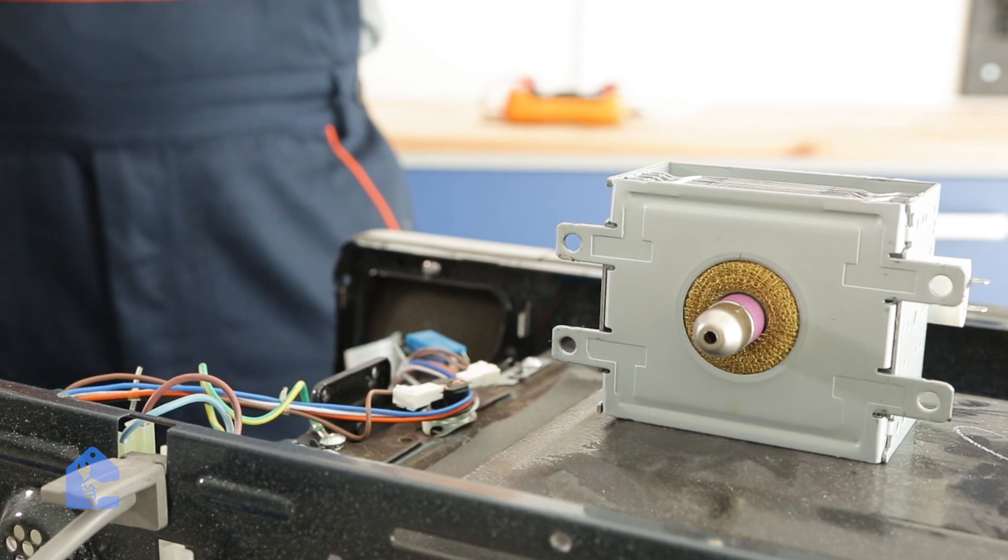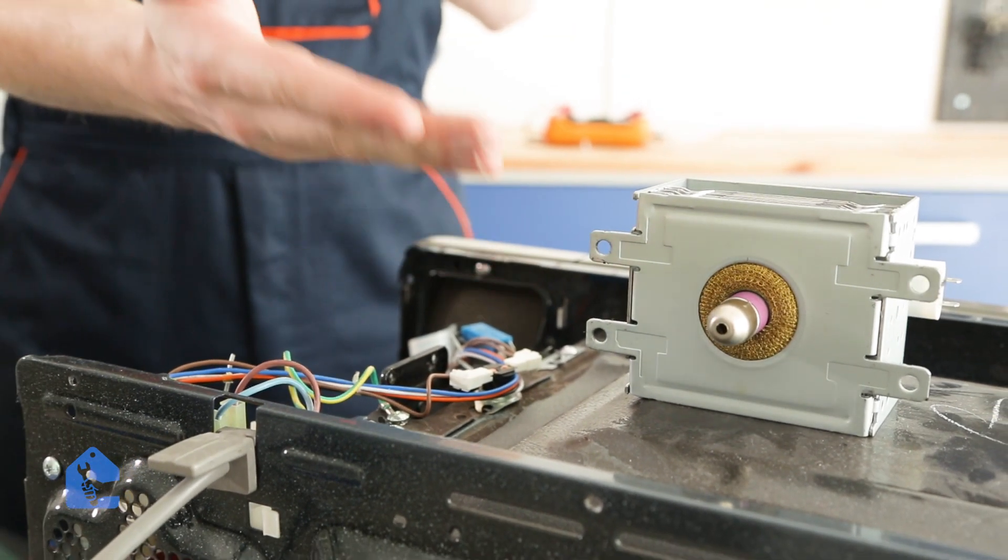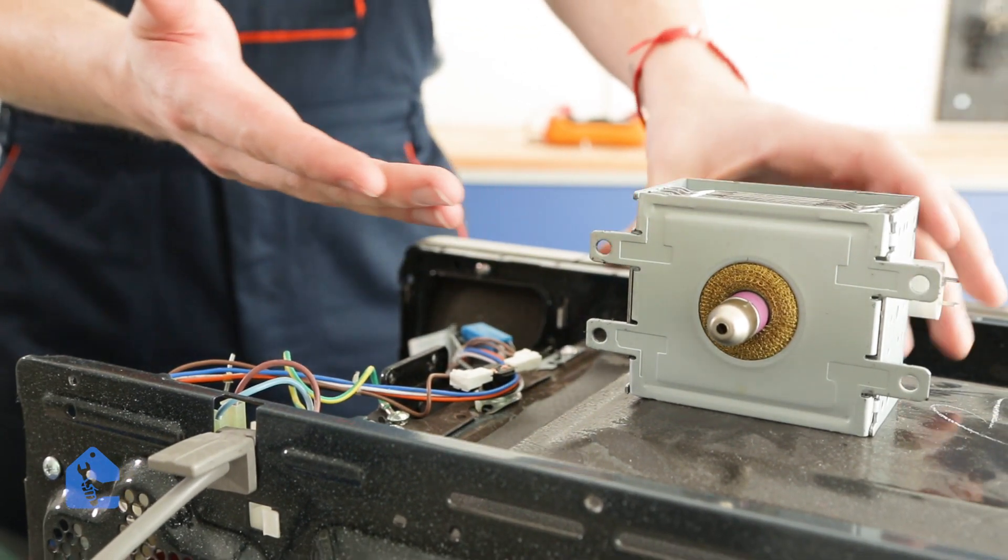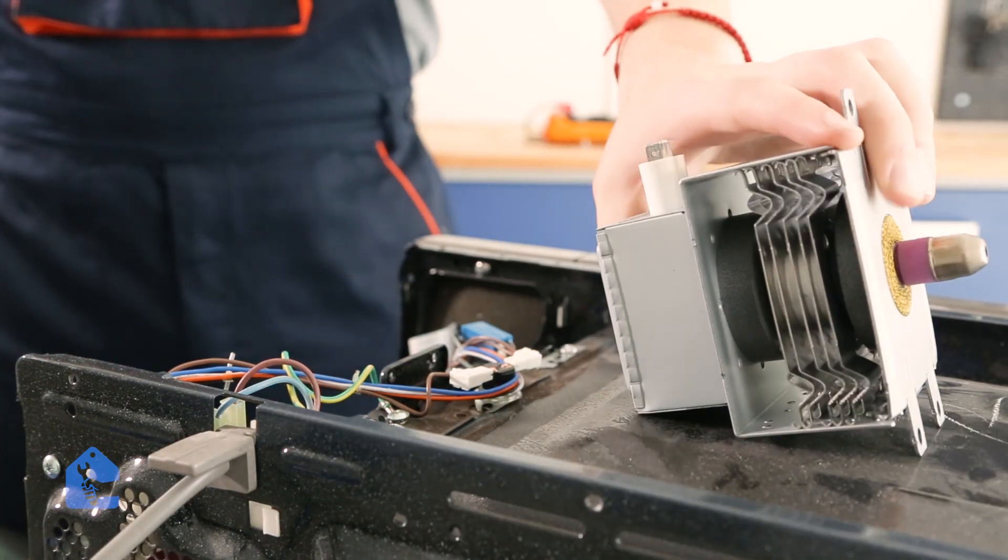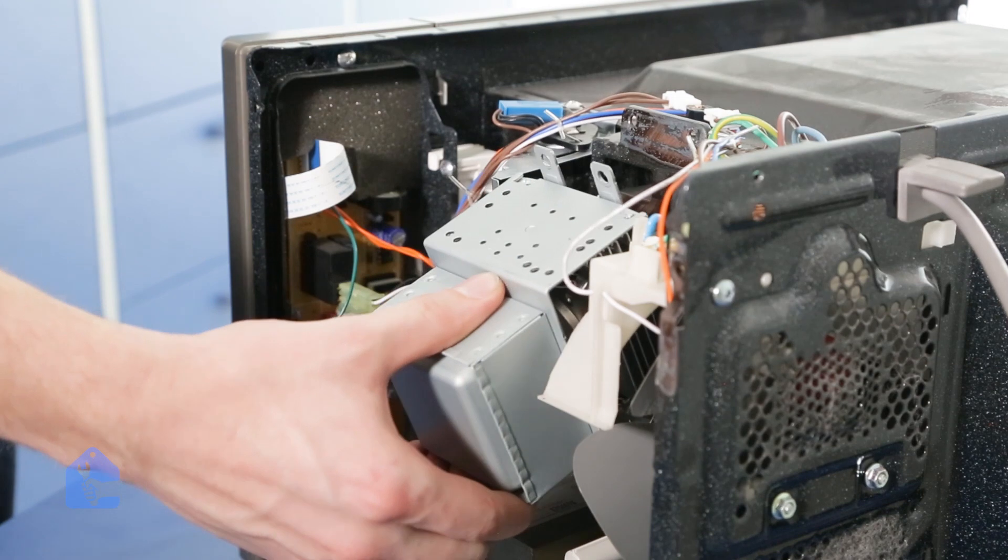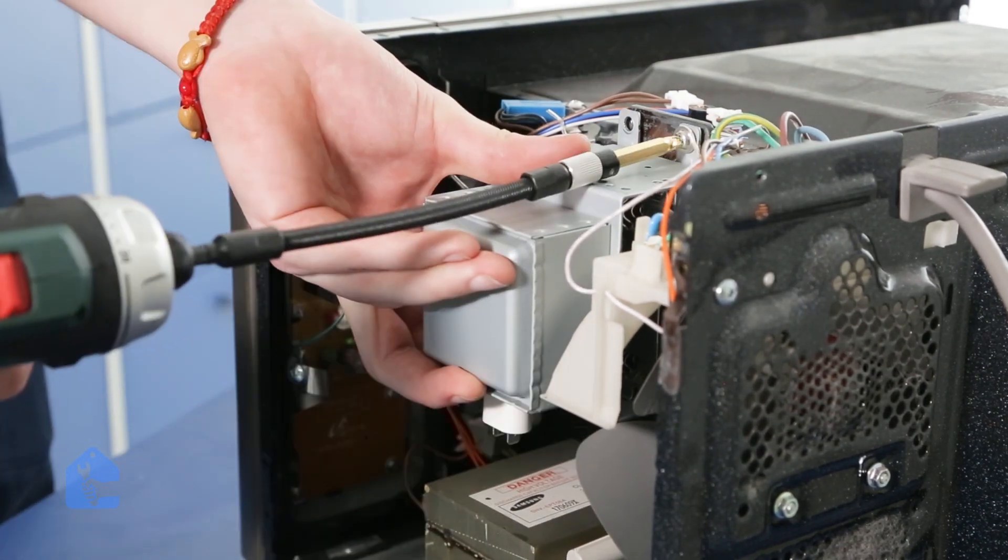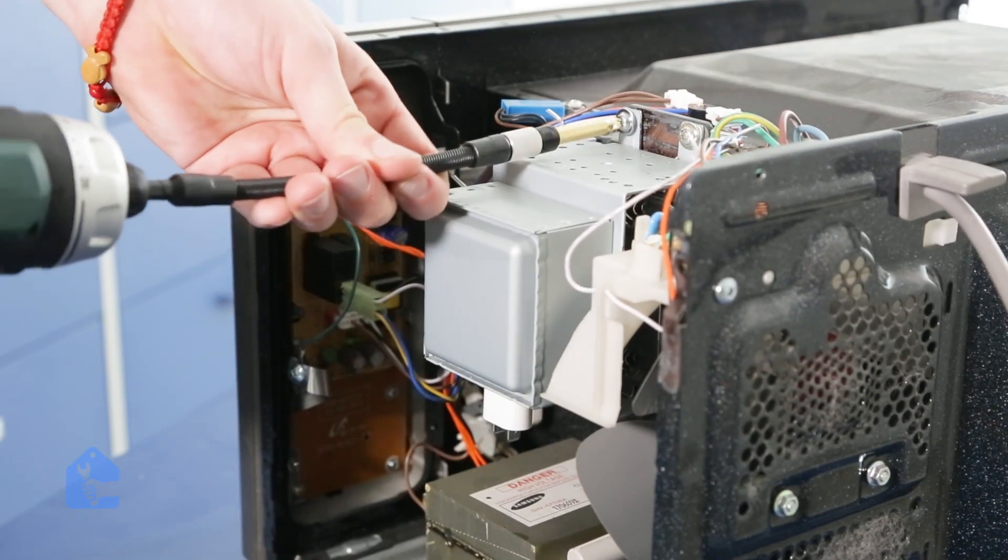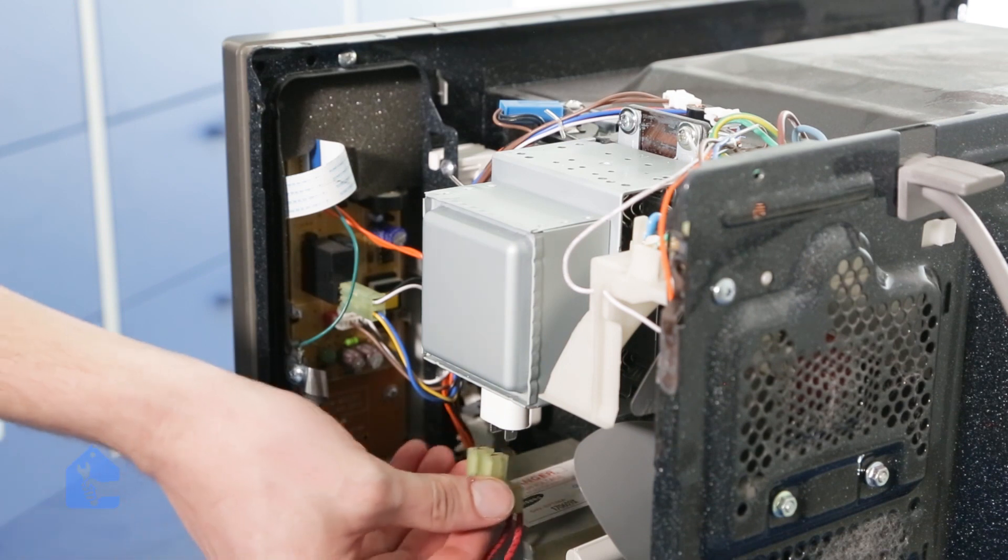So what breaks those magnetrons is that metal pins inside break and then they start touching the metal body inside and shorting out the whole magnetron. So the best solution in this case is to replace the old magnetron with the new one. Now just follow the same steps, putting the new magnetron back in, secure it with screws, and connect it back in.